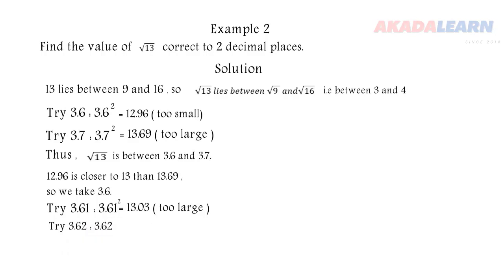Let's try 3.62 and square it. We get 13.10, which is even too large again. So it means that 13.03 is closer to 13. Therefore, you can see that the square root of 13 is 3.61 to 2 decimal places. You can check that with your calculator.